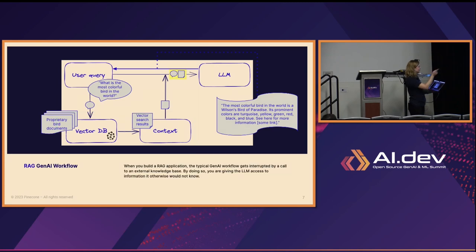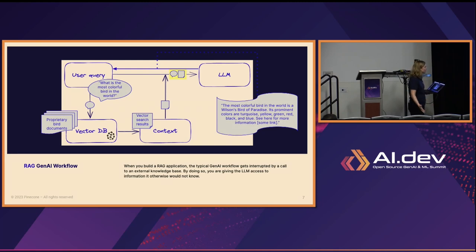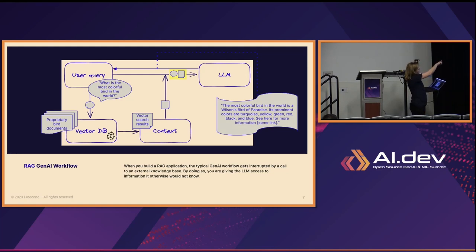Same scenario as before, but this time let's say we have some proprietary, very private bird documents. Now we know that the most colorful bird in the world is not just a parrot, but actually a Wilson's bird of paradise — this is not public information. The LLM could never have known this, and it can only know this because you use RAG in your GenAI application. The yellow highlighted bit shows the combined user query with your context going together to the LLM.